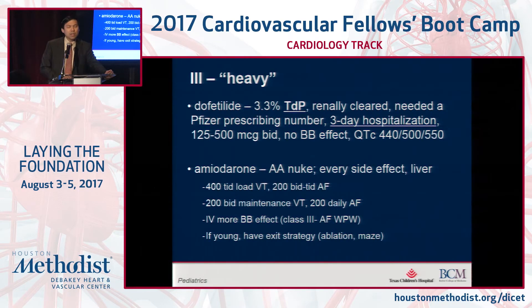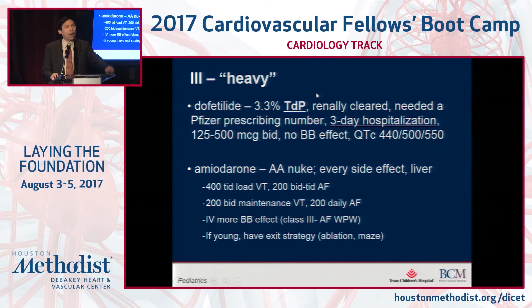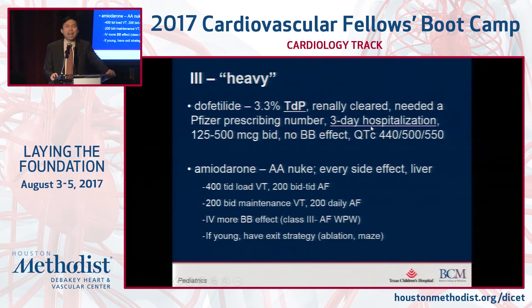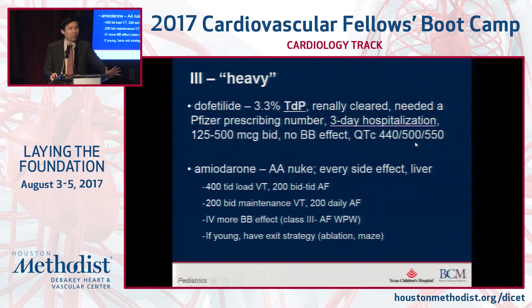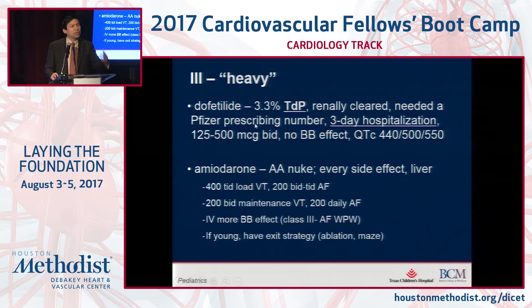The class III heavies are dofetilide and amiodarone. Dofetilide has one of the higher rates of torsades at roughly 3% to 4% torsadogenicity. It is renally cleared and has no beta blocker effect. When it first came out, all of us had to sign up for a prescribing number in order to use it, and it requires a three-day hospitalization where patients take oral medications while we monitor their QTc. The company says the QTc should be 440 milliseconds or less for a structurally normal heart, or 500 milliseconds or less in folks with a conduction abnormality. Some EPs push it into the 520s to 550s, but given the torsadogenic potential, some don't use it unless a defibrillator is already in place.